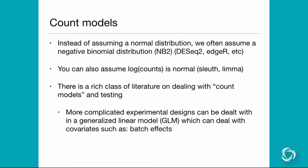You can also assume the log counts are normally or Gaussian distributed. No one actually believes that either model is strictly true, but both models are fairly robust to misspecification — that's why we use them, and people have shown they're pretty robust under many circumstances. Sleuth actually assumes log counts are normal after transcript count inference, and limma assumes a similar thing — that log counts across genes are normally distributed.